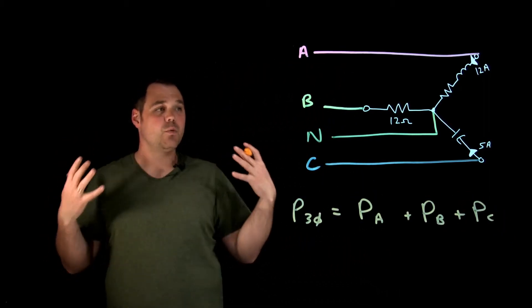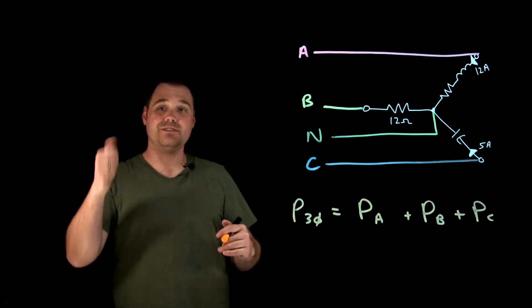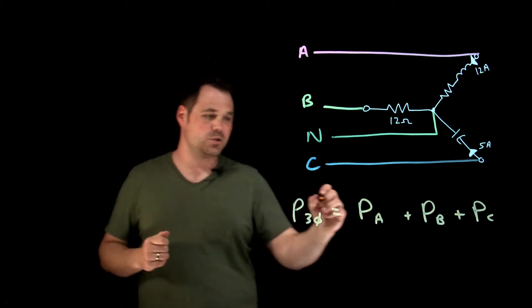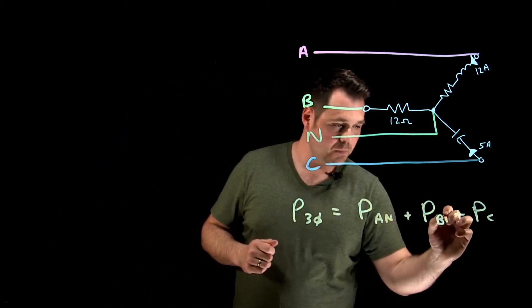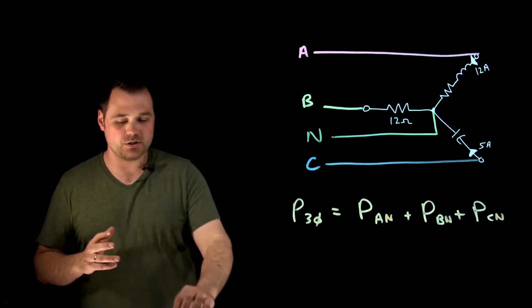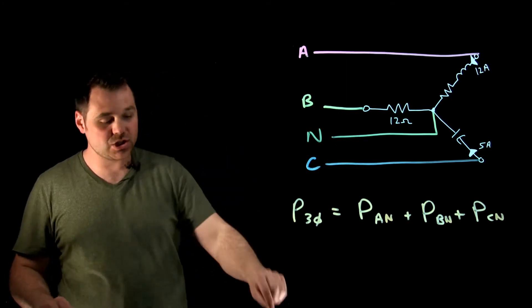Now, in this case, because we are dealing with a Y circuit, I do have another video doing the exact same thing with a delta circuit, which you can check out. But in this case, we're dealing with a Y circuit. So it'd be A to N, B to N, and C to N would be our subscripts. So that's the formula I want to do. So in that case, I need to figure out the power in each phase.